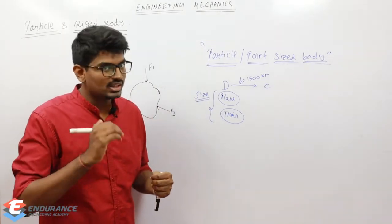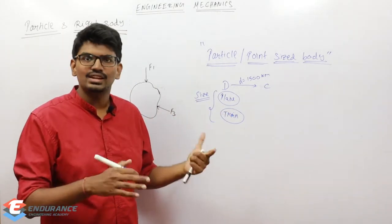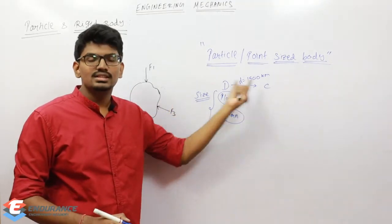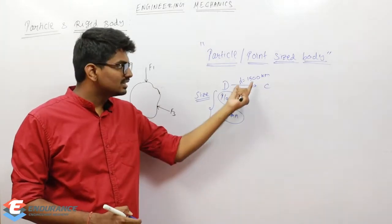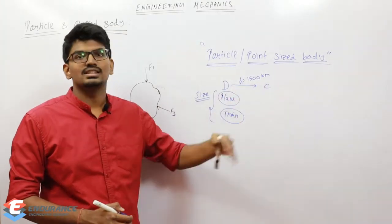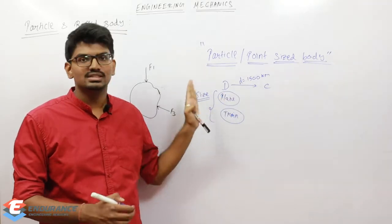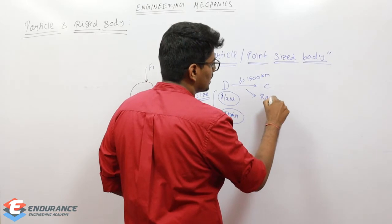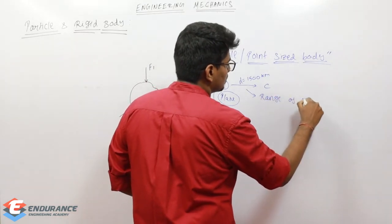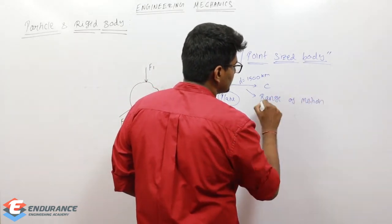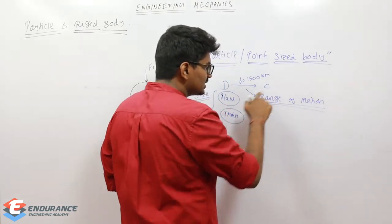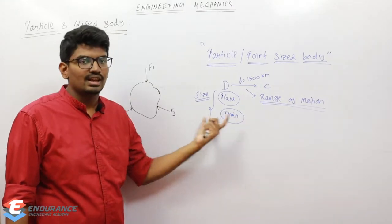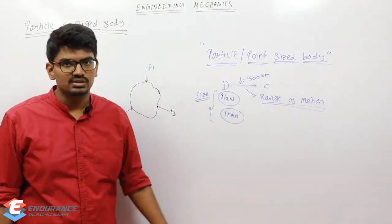The size of the plane or size of the train will be very small compared to the distance between those two cities, or the distance this plane or train has traveled. This distance that the particular body has traveled is what we call the range of motion — the distance this plane or train has traveled from Delhi to Chennai.